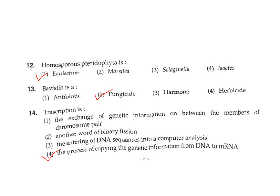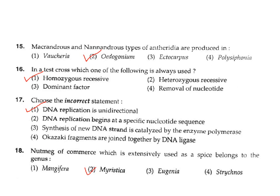Question 13: What is Bevistine? Bevistine is a fungicide, Option 2. Question 14: What is transcription? Option 1 (exchange of genetic information between chromosome pairs) is wrong; Option 2 (another word for binary fission) is wrong; Option 3 (entering DNA sequence into computer analysis) is wrong. Option 4 — the process of copying genetic information from DNA to messenger RNA — is correct, Option 4.